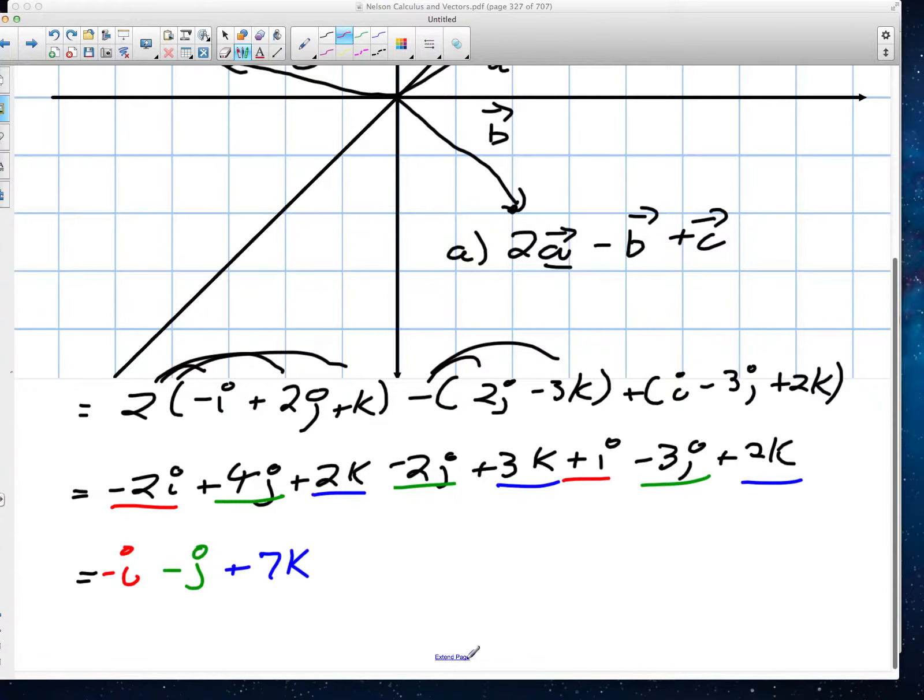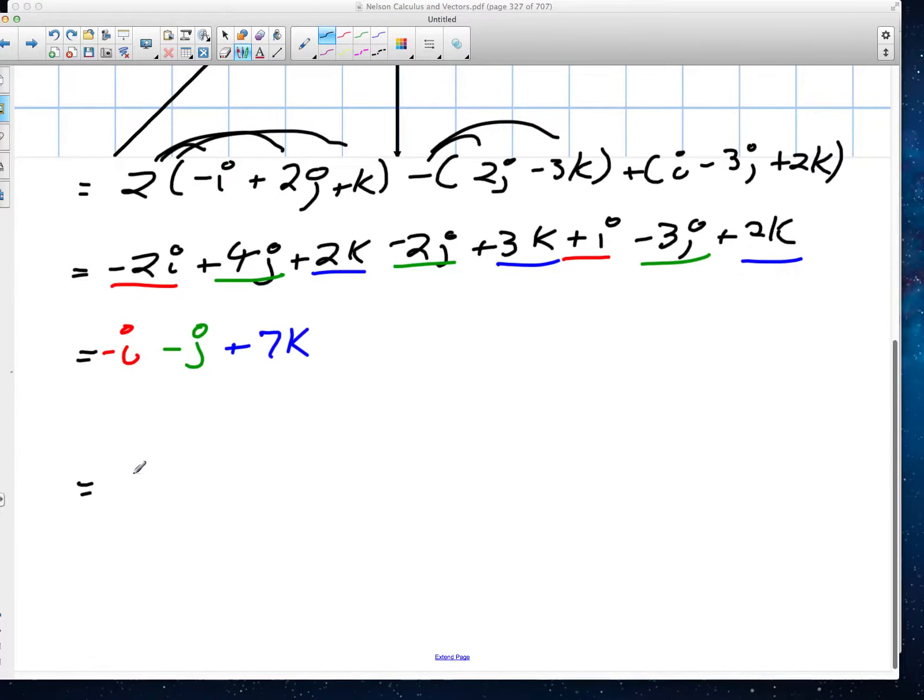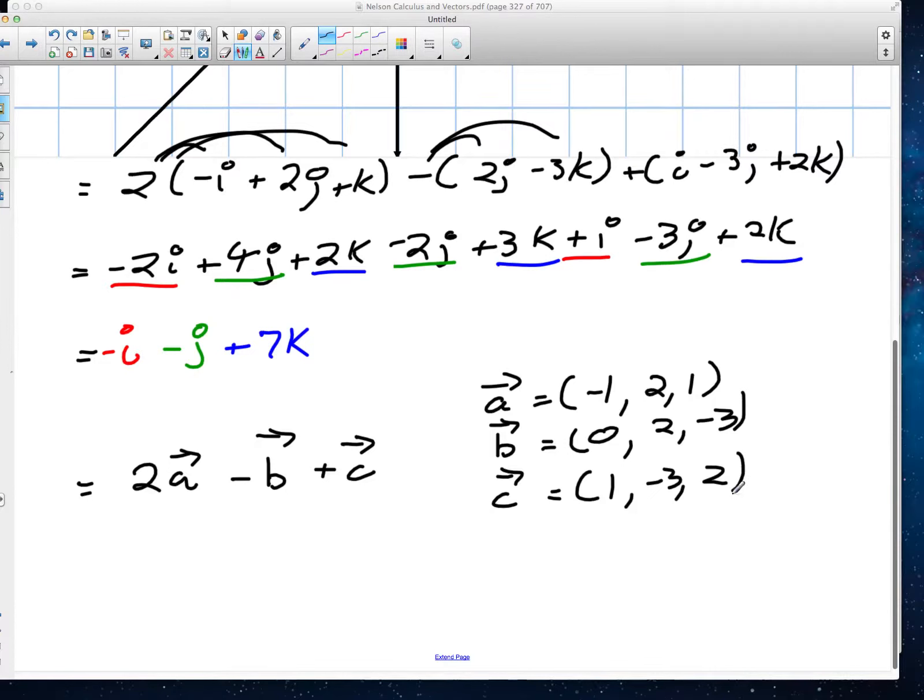And in component form, we'll write the exact same question. The question said 2a minus vector b plus vector c. And now in component form, a was the equivalent of what? Negative 1, 2 and 1, good. Vector b would be 0, 2, negative 3, good. The 0 I thought might get you guys. And vector c would be 1, negative 3, 2. Good. So these are the components of it. We can use this also to solve it. We're just choosing a strategy along here.